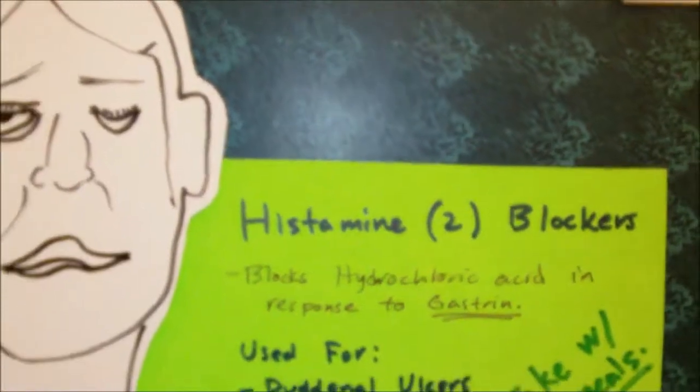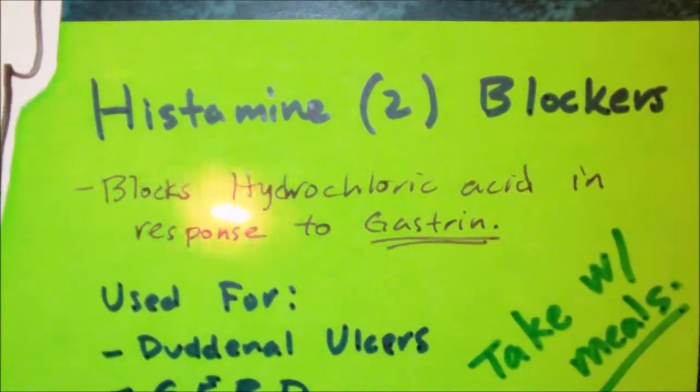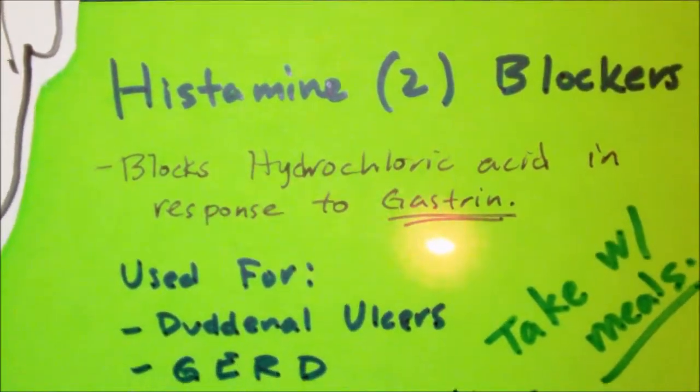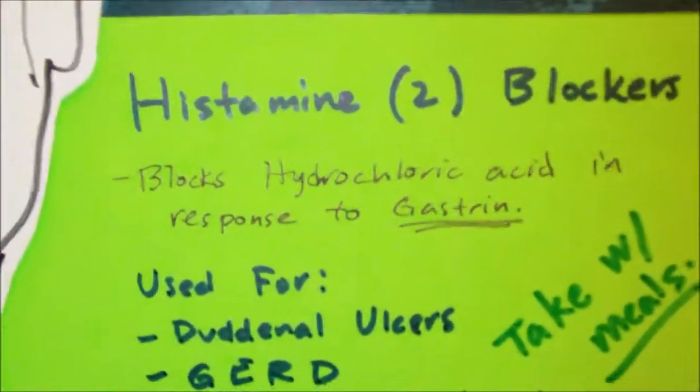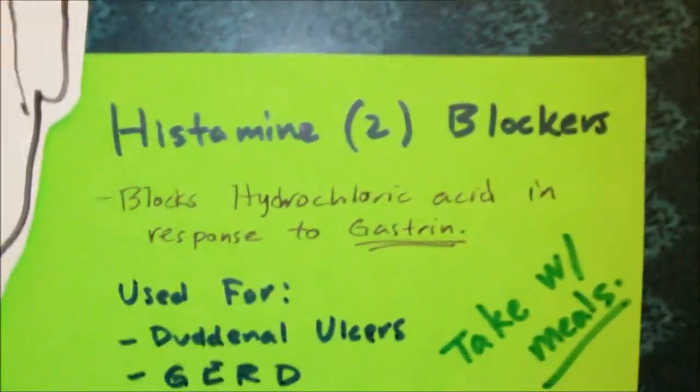Now let's talk briefly about histamine 2 receptor blockers, or H2 blockers. To simplify this, we can basically say that these drugs block the release of hydrochloric acid in the stomach in response to gastrin. So overall, what it does is it basically decreases the production of gastric acid from the parietal cells within the stomach.